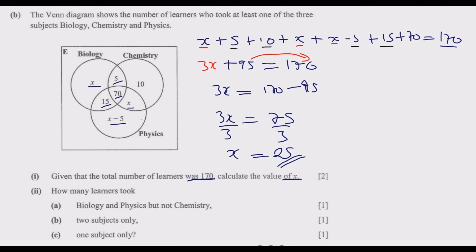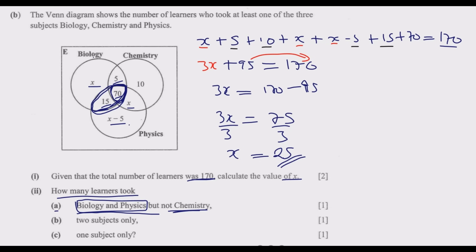Sub-question 2 asks how many learners took Biology and Physics but not Chemistry. Looking at the Venn diagram, the region for Biology and Physics but not Chemistry excludes those doing all three subjects. That region contains 15 learners, so the answer to part 2 is 15.